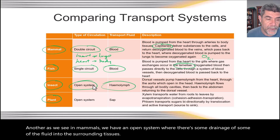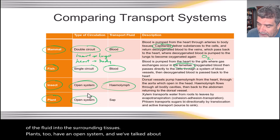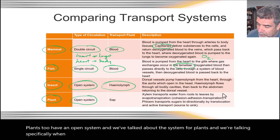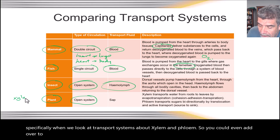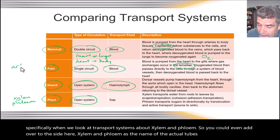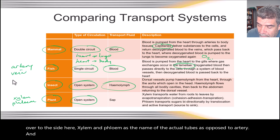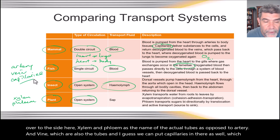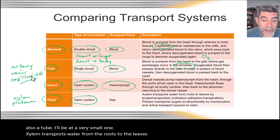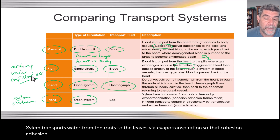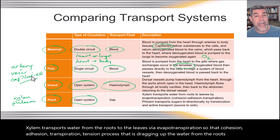Plants also have an open system, and when we look at transport systems in plants we're talking specifically about xylem and phloem. You could add xylem and phloem to the table as the names of the actual tubes, as opposed to artery and vein — and capillaries — which are also tubes. Xylem transports water from the roots to the leaves via evapotranspiration — the cohesion, adhesion, transpiration tension process that drags water from the roots to the leaves and out through the stomata.